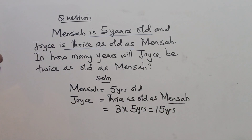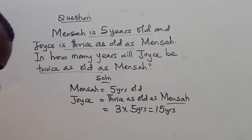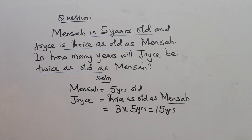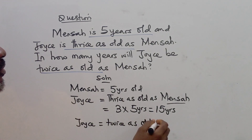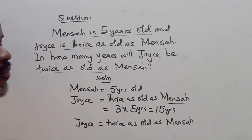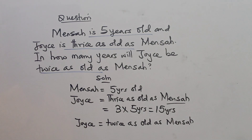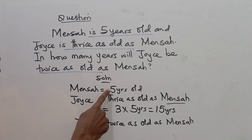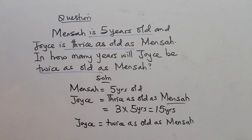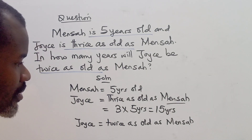Alright, so let's proceed. Let's look at the equation: in how many years would Joyce be twice as old as Mensa? So Joyce would be twice as old as Mensa. The idea is we have to know in how many years — that number will be added to Mensa's current age and Joyce's current age. Remember, Mensa is already 5 and Joyce is already 15 years.